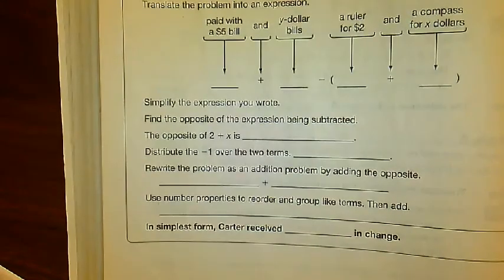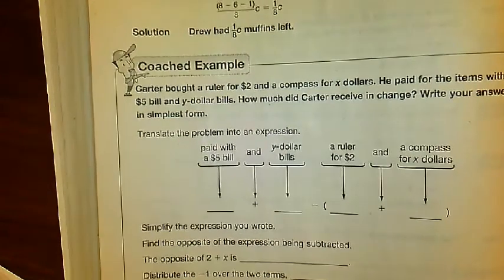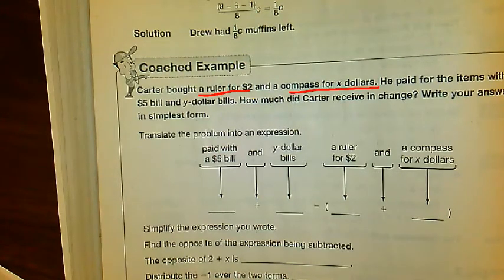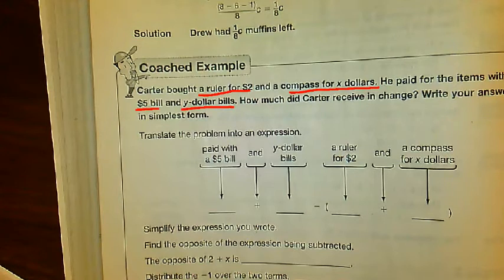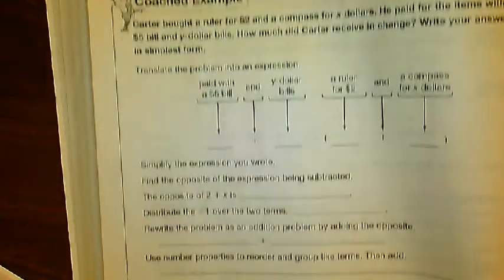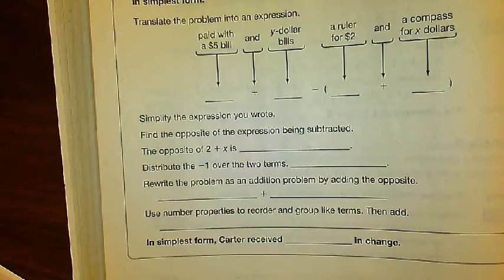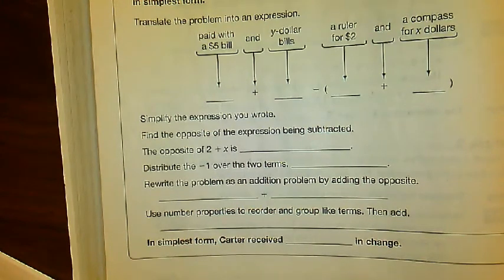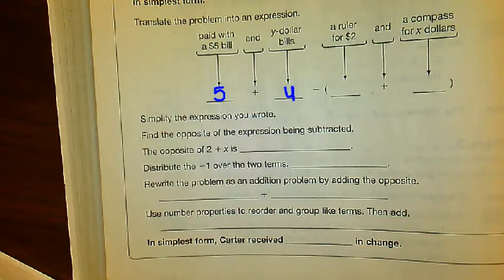And our last one. So let's just read the question real quick. Carter bought, rather, a ruler for $2 and a compass for x dollars. He paid with a $5 bill and y dollar bills. So how much change does he have? We're going to write an expression. Now below, what they've done for us is they've actually broken down the question to be a little easier for us to work with. So paid with a $5 bill, that would be a $5, and then y dollar bills. So that's what he has, he's using that.